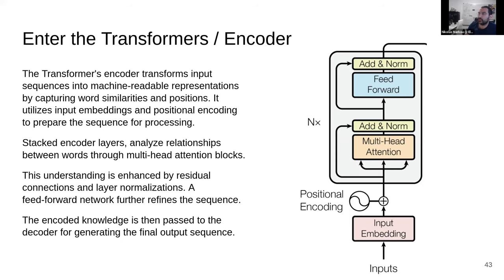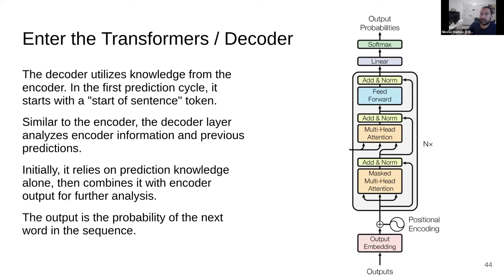And then you feed it to the decoder. The decoder utilizes the knowledge from the encoder. In the prediction cycles, it starts with the start-of-sentence token, and then it predicts the next token and the next token based on the previous, and then on the previous, and then the previous, and then this is how you form words, sentences, and it can really go on forever. Initially, it relies on prediction knowledge alone, then combines it with encoder output for further analysis. The output is the probability of the next word in the sequence, and then we do what is called sampling, meaning based on those probabilities we randomly select, and we usually get the highest probability token and give it out. And then we do the same again, feed it back, and do the same thing again.